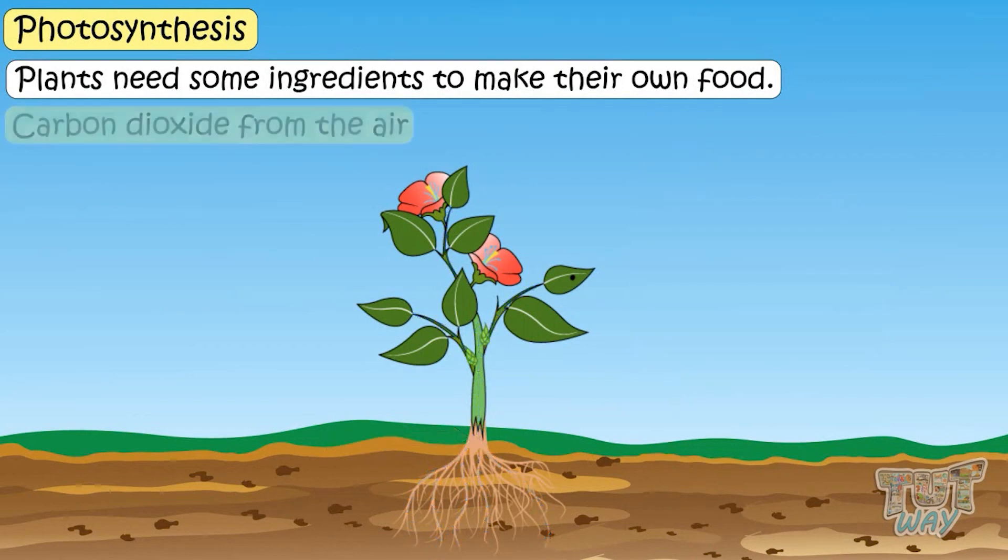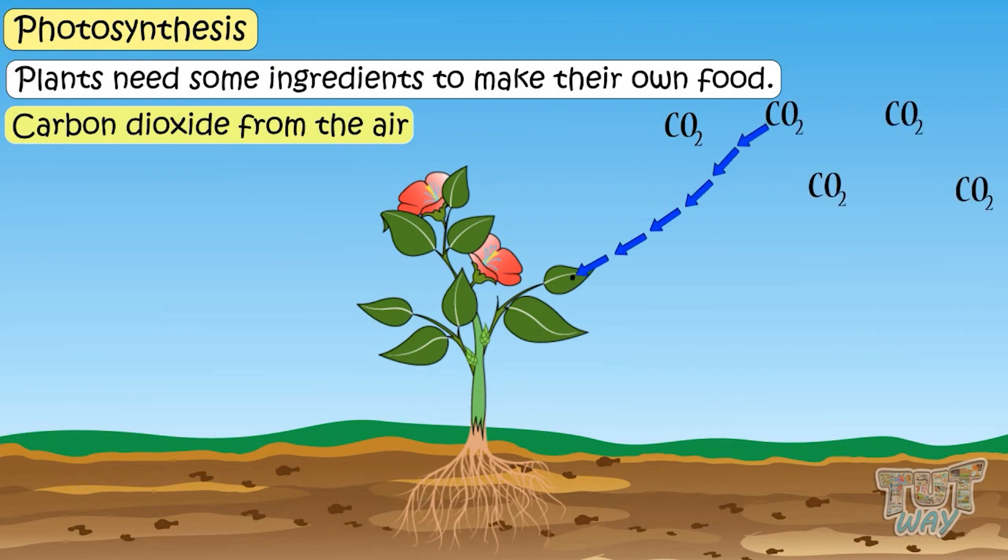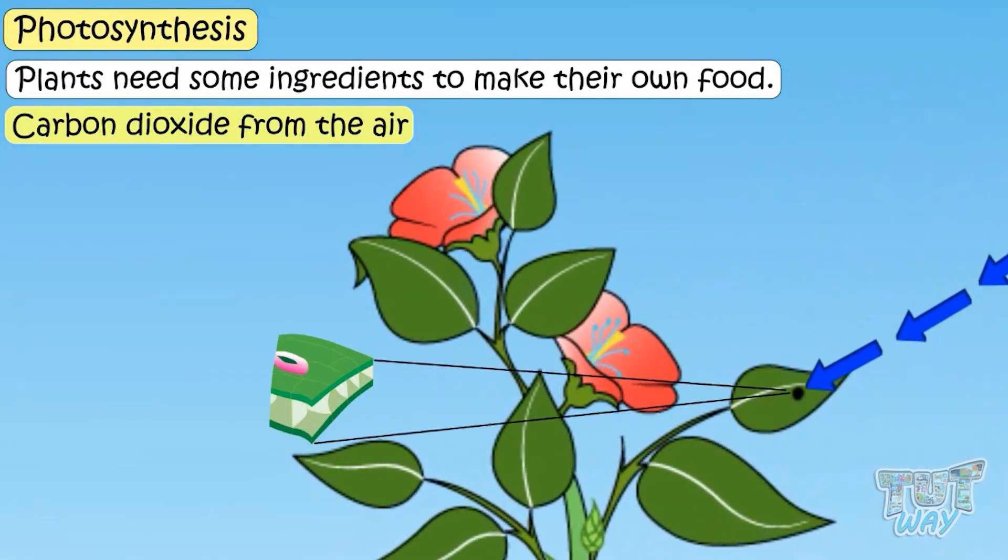Then is the carbon dioxide. Leaves get carbon dioxide from the surrounding air, and it enters the leaves through the small openings in leaves called stoma or stomata.